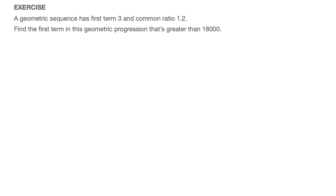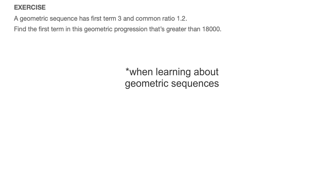In this video on geometric sequences, we learn about a must-know skill when learning about this topic, illustrated in the exercise we have here. We're told a geometric sequence has first term 3 and common ratio 1.2, and we need to find the first term in this geometric progression that's greater than 18,000. Knowing how to find which term is the first to exceed a given value is a very important skill.